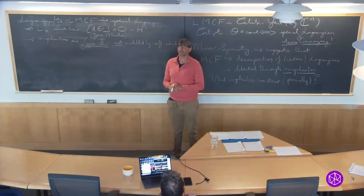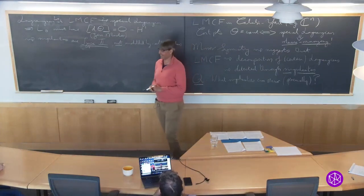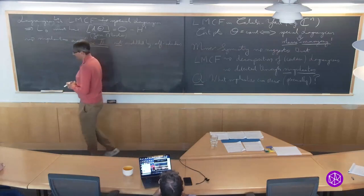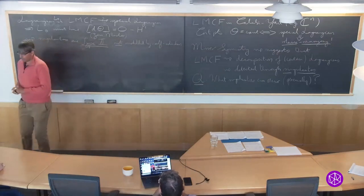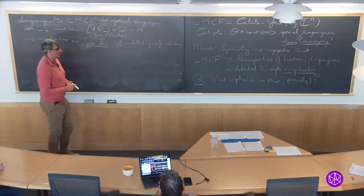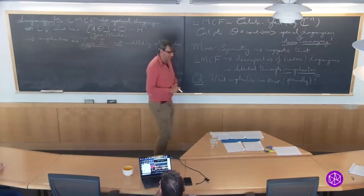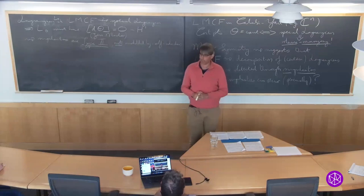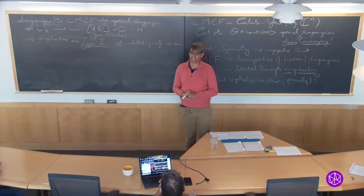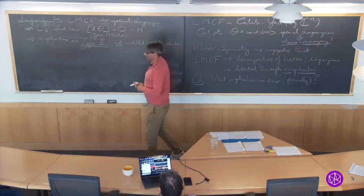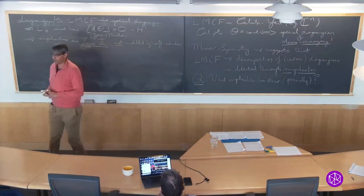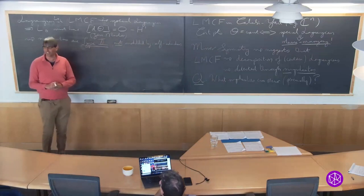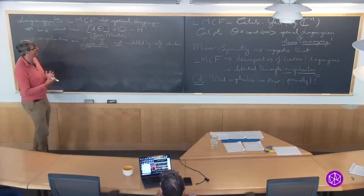To answer the question: type 1 is all the simple stuff — self-similarly shrinking — and type 2 is everything else. At finite time there are only two types. Type 1 is simple and type 2 is everything else.